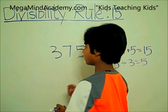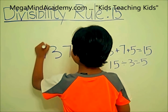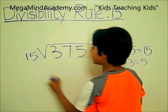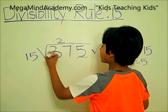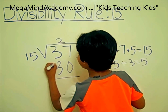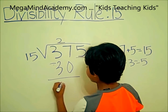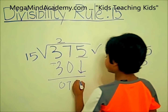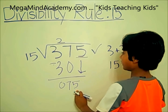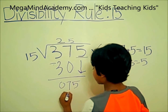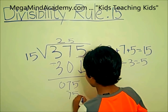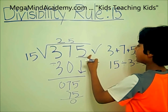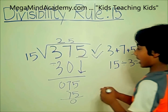Let's check. 375 goes inside the division sign, and 15 goes outside. 2 times 15 is 30. 37 minus 30 equals 7. Now we bring down 5, making the number 75. 5 times 15 is 75. 75 minus 75 is 0. So that means 375 is divisible by 15.